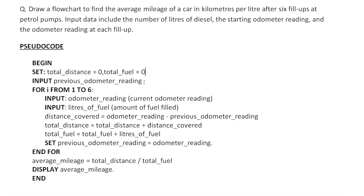Accept one variable: the previous odometer reading — input m (previous automated reading). Then we need a loop for six fill-up stations. Use a for loop: i from 1 to 6, repeating six times.